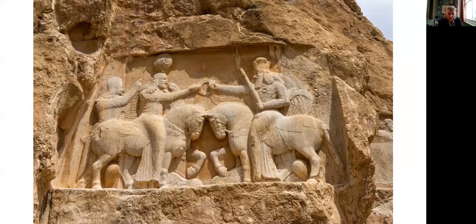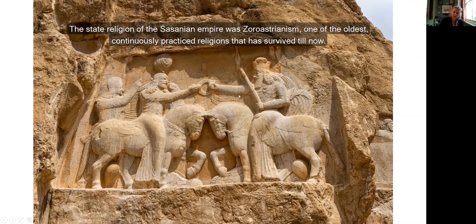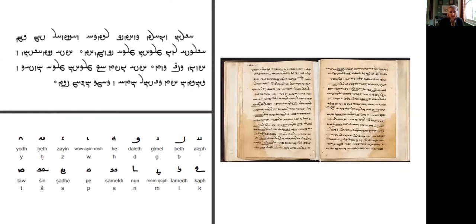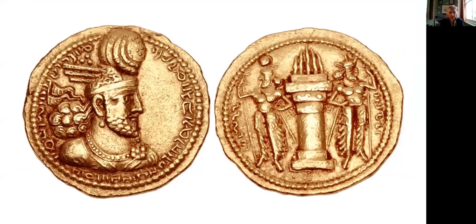Here is another Sassanian image where you can see the headwear has changed and there is a relationship between church and state: the king on the left is receiving a diadem — a mandate from the representative of the divine to rule on his behalf. Here are examples of the Pahlavi script, which is becoming much more curly and does look not dissimilar to Syriac or Royal Aramaic. And more coinage from this period shows that the inscription is now in Middle Persian.